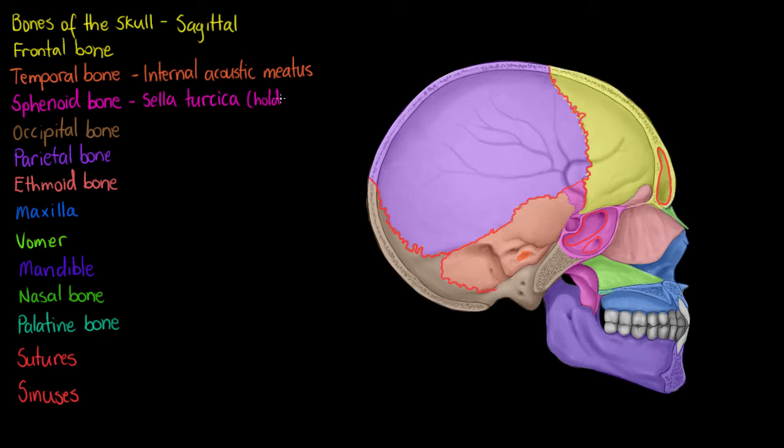The next structure that we can see that's a depression in our sphenoid bone is the sella turcica. And it's going to be a depression that will house our pituitary gland. I've just outlined it and coloring it in here. Our pituitary gland being part of the brain and very important in hormone regulation of the body.